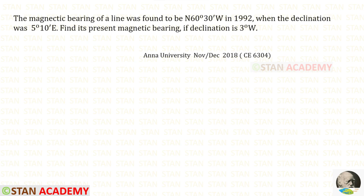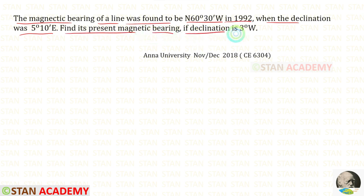Hello everyone. Today we are going to do a problem based on compass surveying. Let us read the question. The magnetic bearing of a line was found to be north 60 degree 30 minutes west in 1992, when the declination was 5 degree 10 minutes east. Find its present magnetic bearing if declination is 3 degree west.